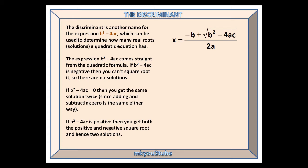The expression b squared minus 4ac comes straight from the quadratic formula. If b squared minus 4ac is negative, then you can't square root it,